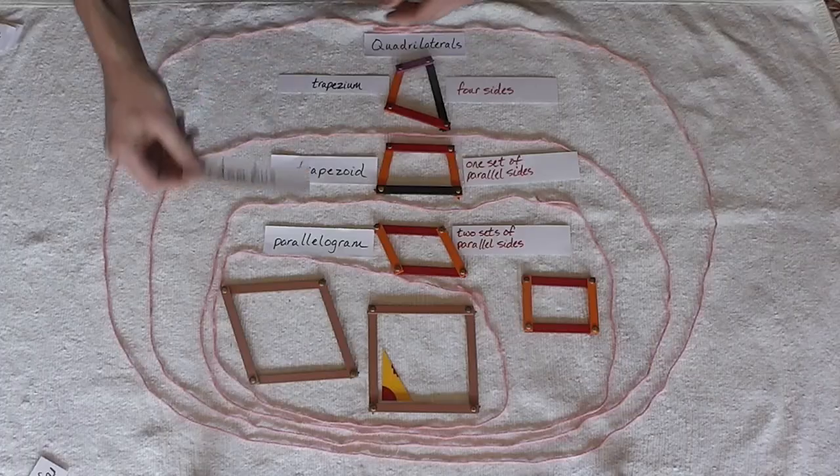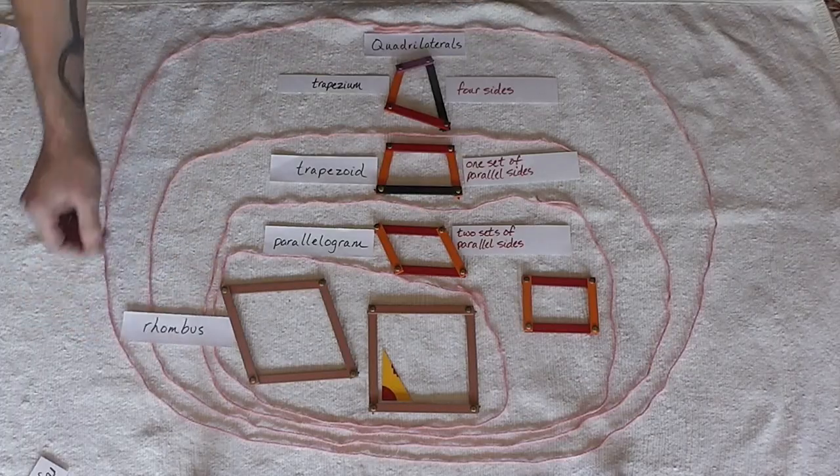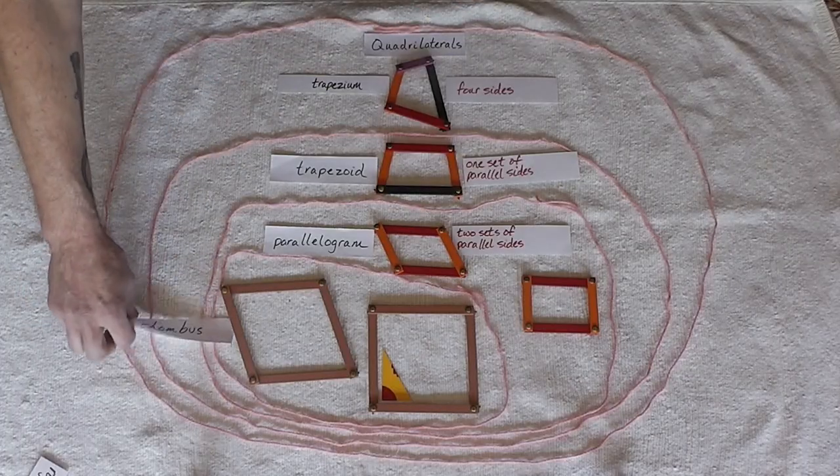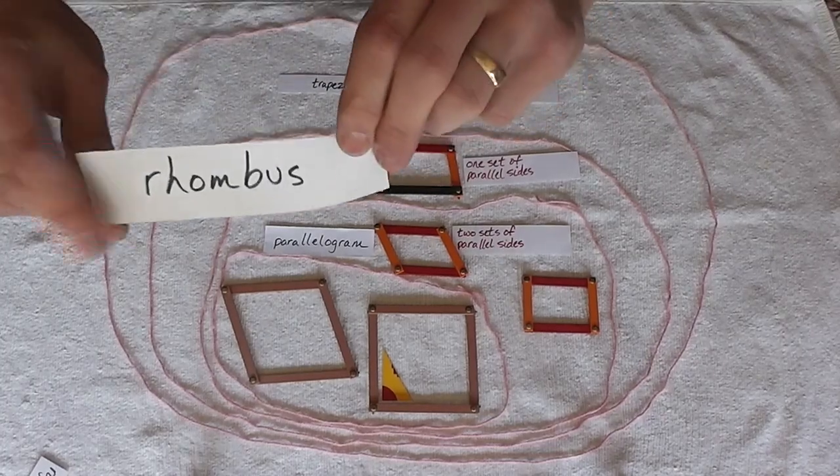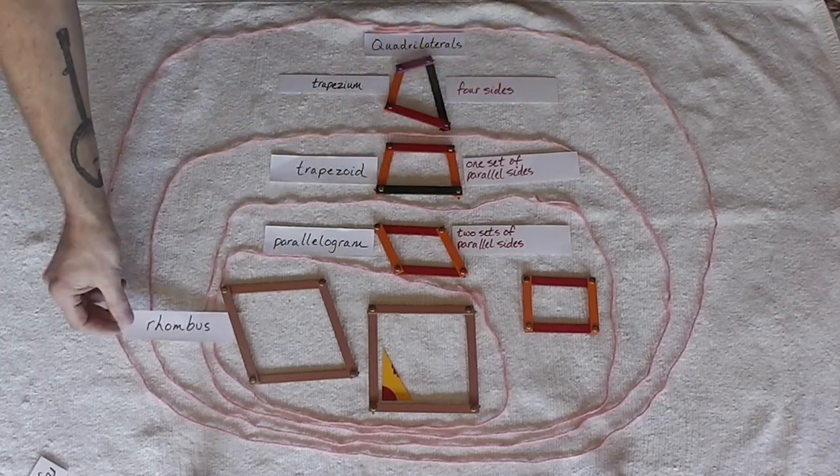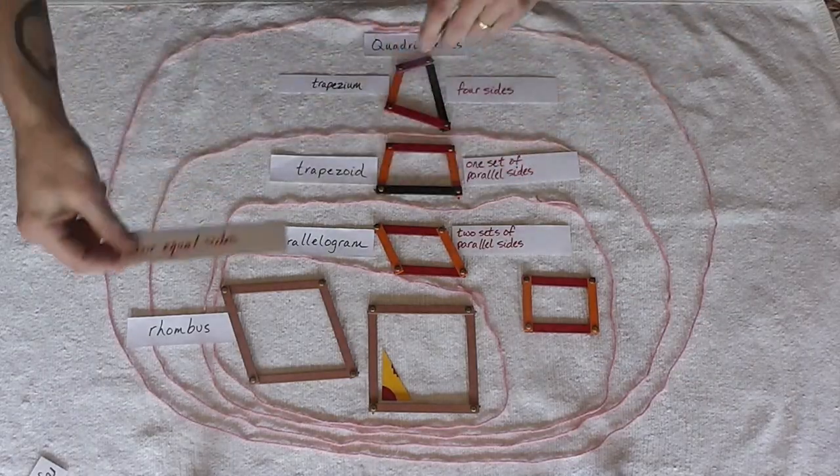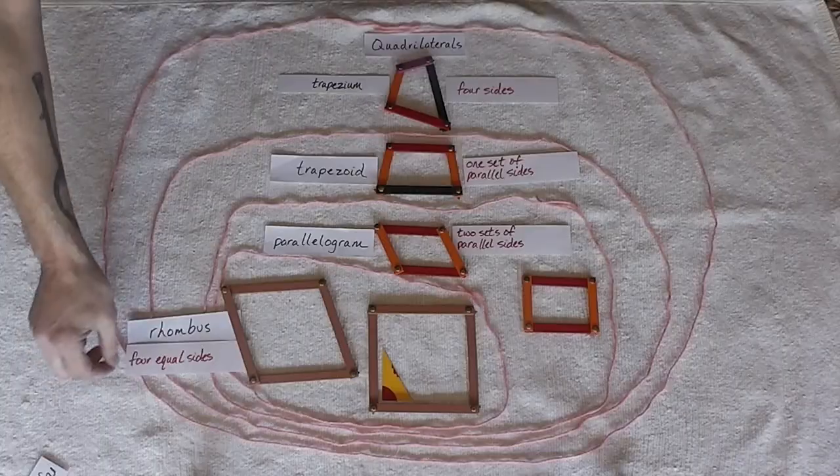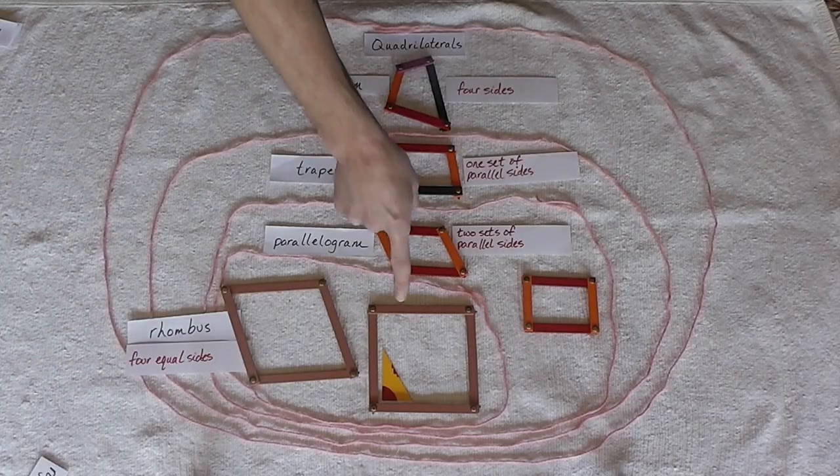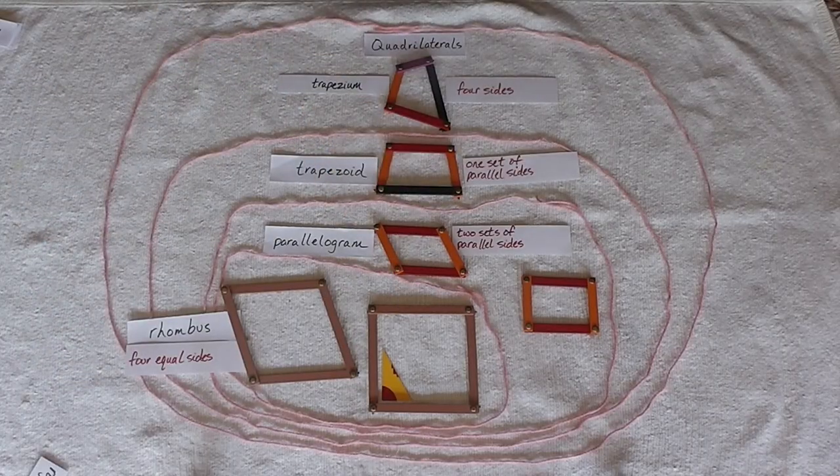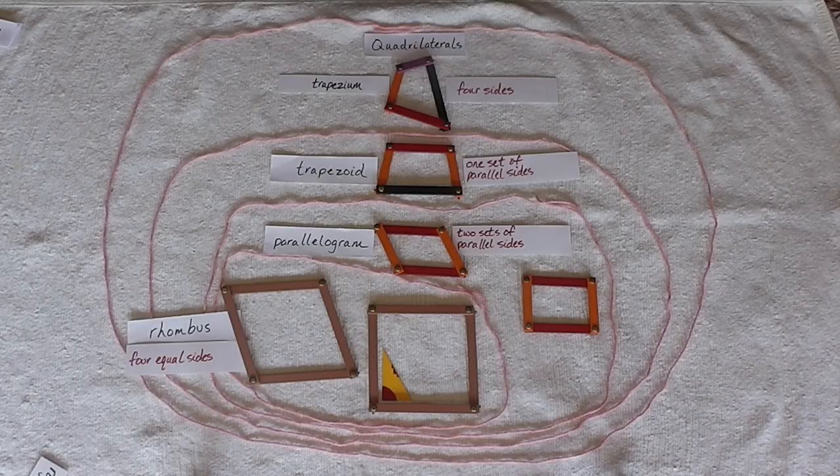So our rhombus, let me show you the label. The rhombus has four equal sides. Rhombus has four equal sides. That means that this could be a rhombus too. Because it has four equal sides.